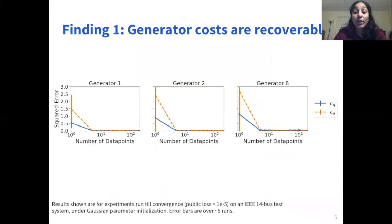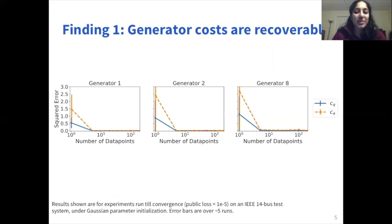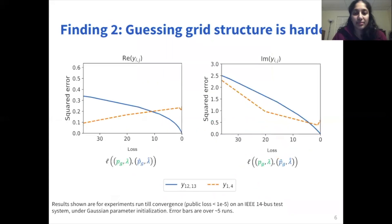Going through this process and running some experiments on a 14-bus test system, we find two major things. First, we find that if you have information about the power grid structure, then you can fully recover information about the power grid costs with only a small amount of historical data. On the other hand, we find that recovering grid structure is harder, in part because there are multiple different power grid structures that can produce the same observed behavior.